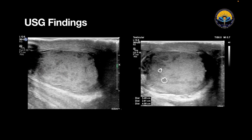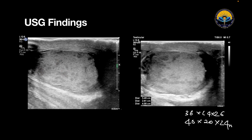Look over here — these are the hypoechoic lesions. The size of both the testes appears to be normal: the right testis is 36 x 24 x 26 mm while the left testis is 40 x 26 x 24 mm. The sizes appear normal, but there is a bilateral increase in size of the epididymis with heterogeneous echotexture.